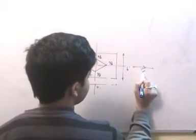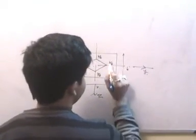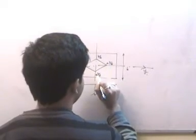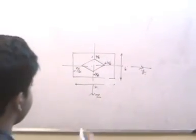Now if this is my y direction and this is my z direction, then effectively this is plus, this is plus, this is minus, this is minus.